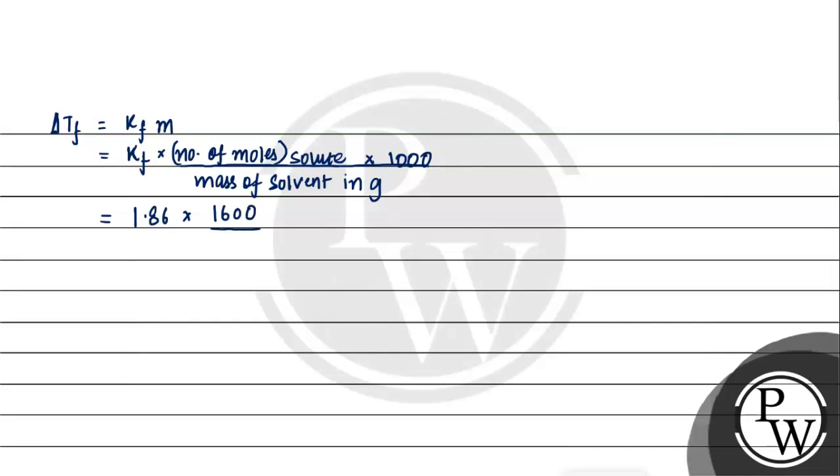Delta Tf equals 1.86 times 1600 over 32, divided by 8000 (mass of solvent water), times 1000. Number of moles is mass divided by molecular mass.